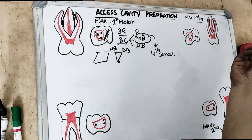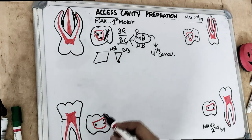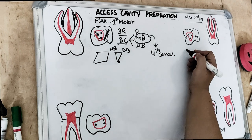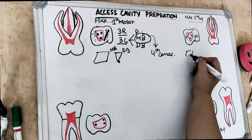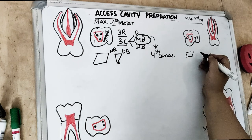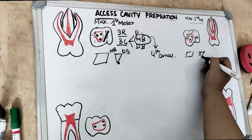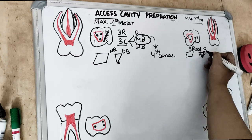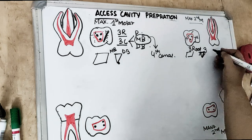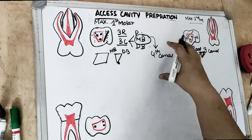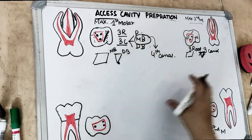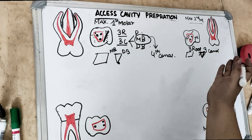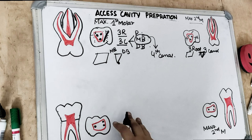The maxillary second molar also has the longest palatal root, similar to the first molar, but it is narrower mesiodistally. The roof of the pulp chamber is again rhomboidal, and the access cavity is again triangular. There are three roots and three canals in the maxillary second molar as well, but there are fewer lateral canals and less divergent roots compared to the maxillary first molar.